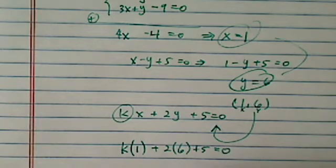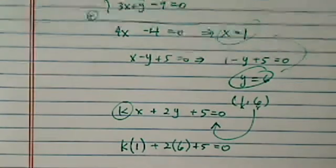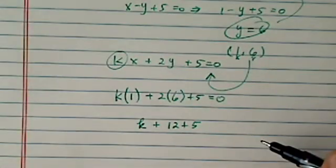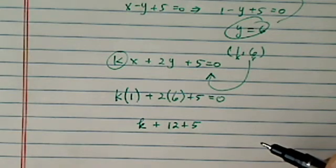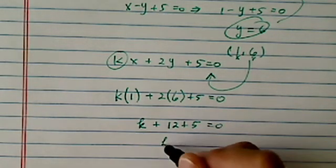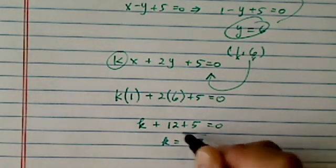We have k plus 12 plus 5. Take it out here. k plus 12 plus 5 equal to 0. So obviously my k is minus 17.